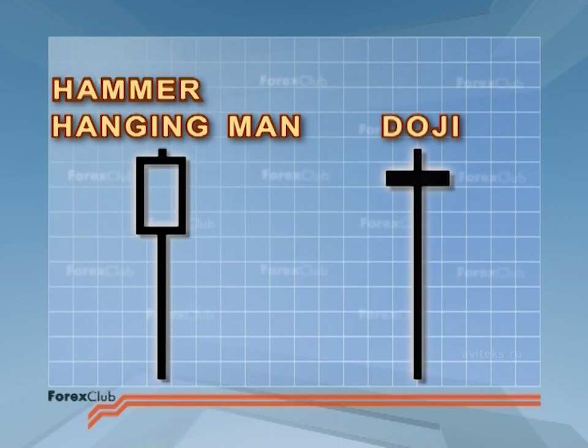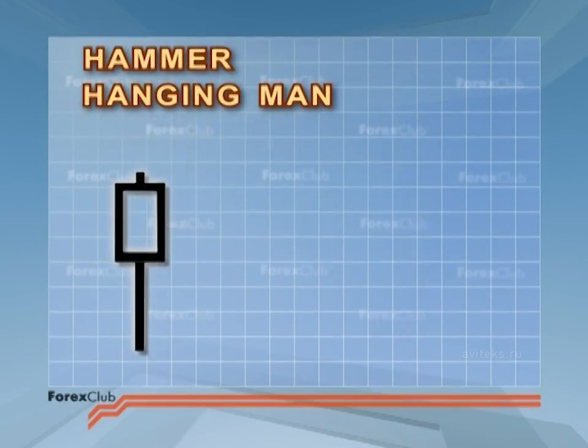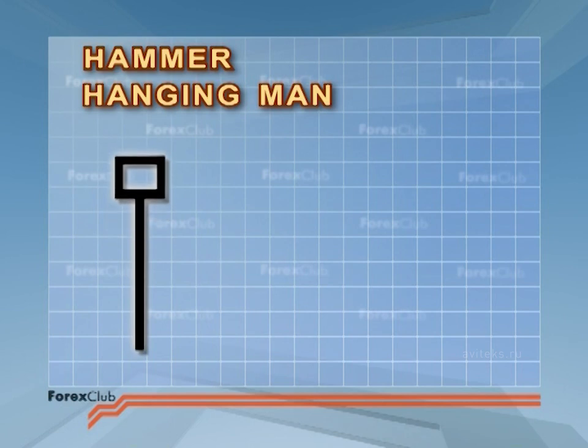You'll have noticed that hammers and hanging men are very similar to doji. The main difference is that the hammer and the hanging man have bodies, albeit small bodies, they are bodies nevertheless. What we want are long lower shadows, short upper shadows, and small bodies.